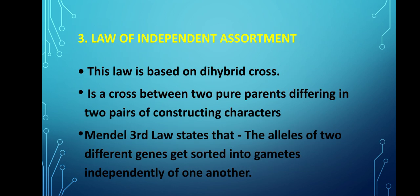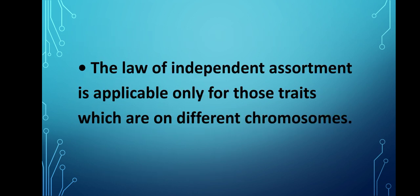The third is the Law of Independent Assortment. This law is based on the dihybrid cross — a cross between two pure parents differing in two pairs of contrasting characters. Mendel's third law states that the alleles of two different genes get sorted into gametes independently of one another. The Law of Independent Assortment is applicable only for those traits which are on different chromosomes.